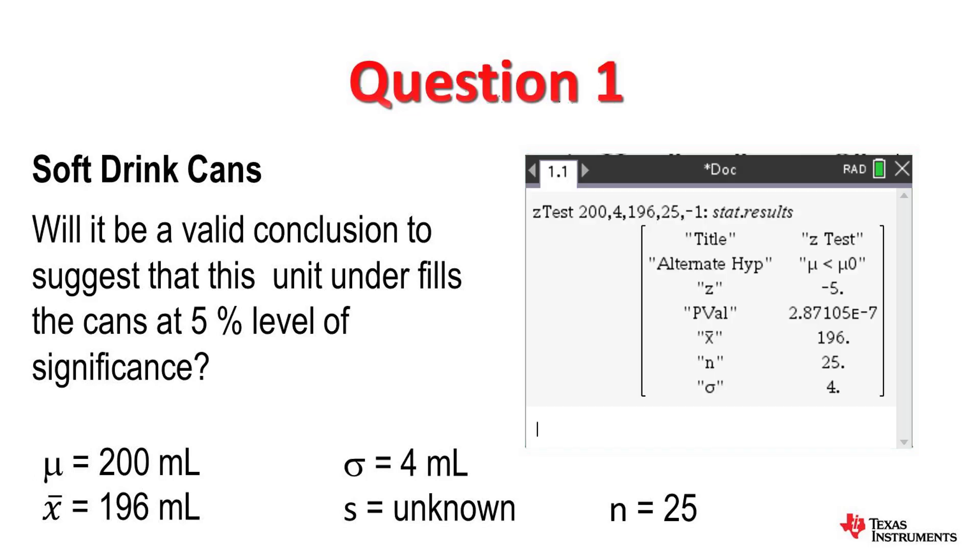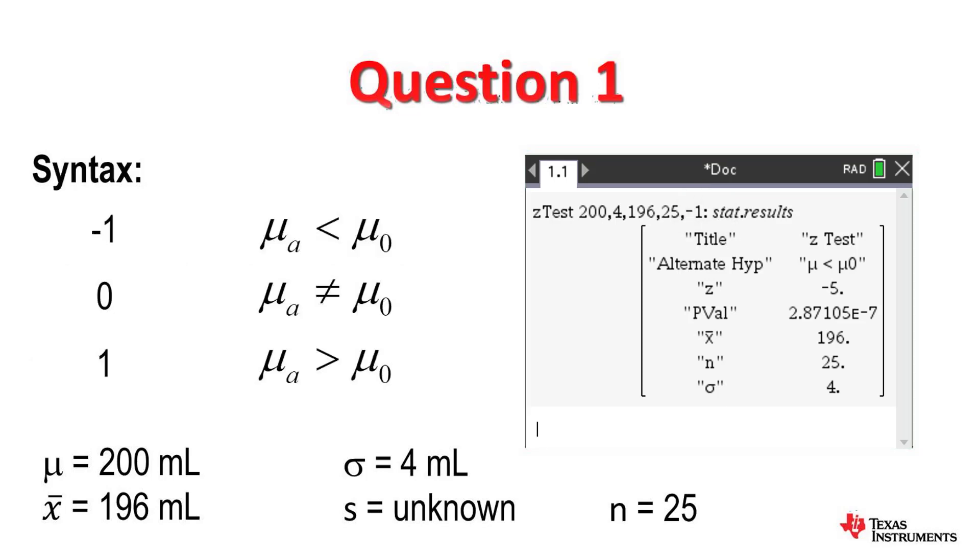When I click OK, I want to draw your attention to this bit over here. It says negative 1. That negative 1 is telling us that we are actually saying that the sample mean is less than the actual mean. If that value was 0, we are doing a bi-directional test. If that value was 1, then we are assuming that the sample mean is greater than the actual mean.